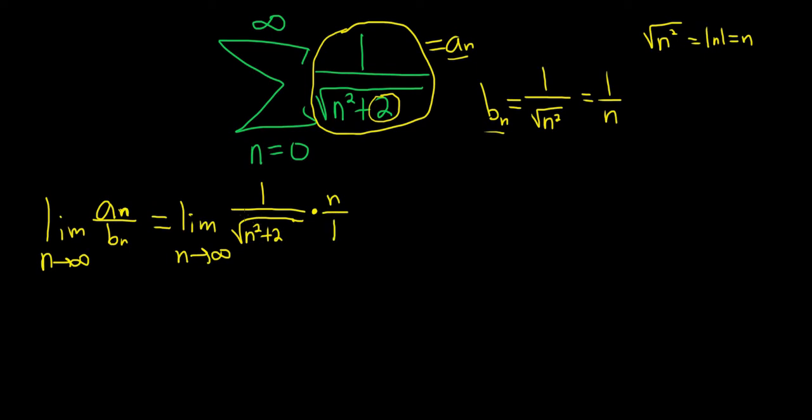And you can see that when n is big, we have n, and this down here is basically n, so we're just going to get 1, which is finite and positive.